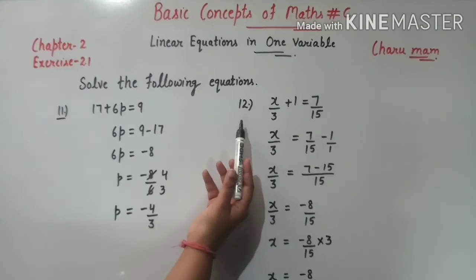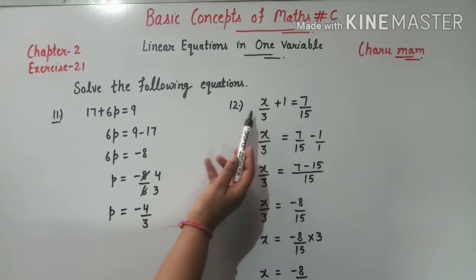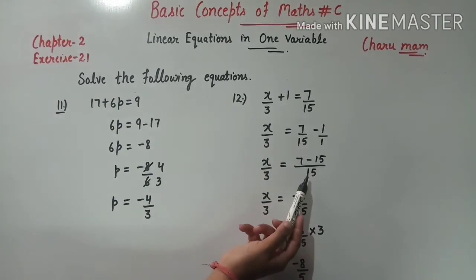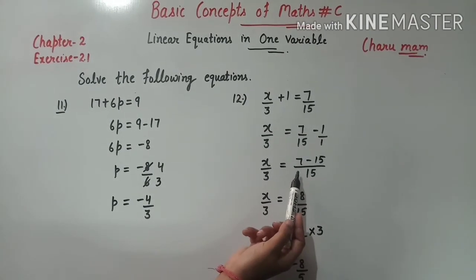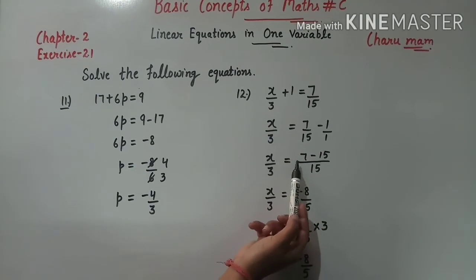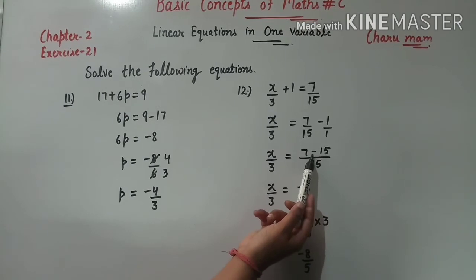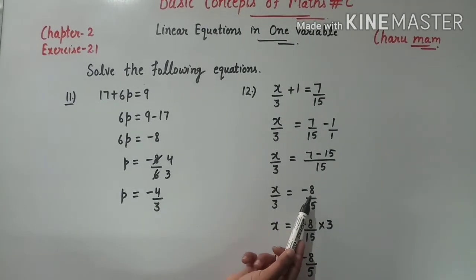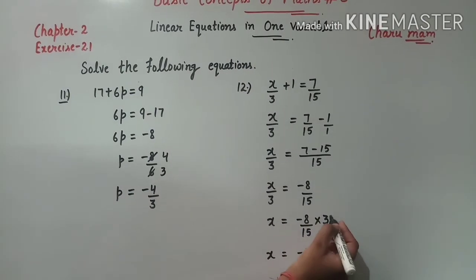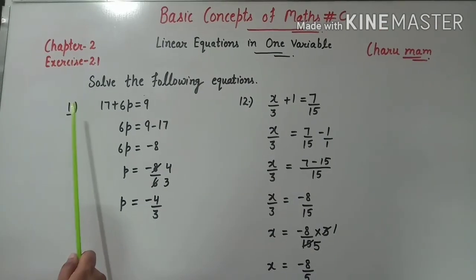Question 12: x upon 3 plus 1 equals 7 upon 15. Plus 1 right side जाएगा तो minus 1 होगा: x/3 = 7/15 - 1. LCM 15 लेंगे: 7/15 - 15/15 = -8/15. 3 divide में था तो right side multiply में: x = (-8/15) × 3. Simplify: 3×5=15, so x की value है minus 8 upon 5.